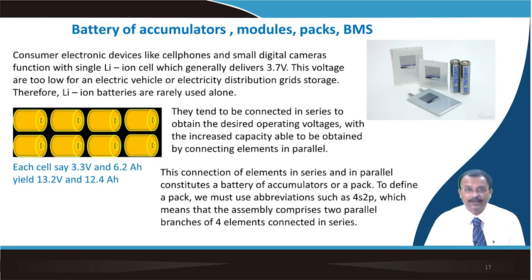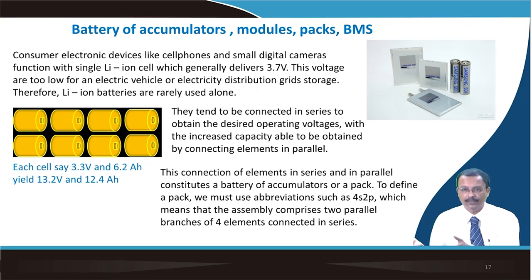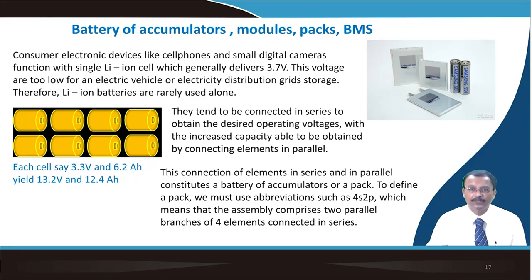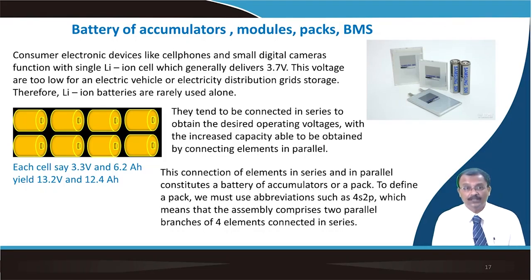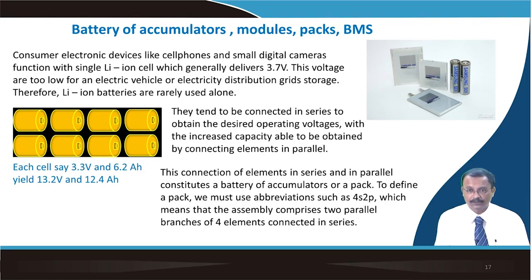Consumer electronic devices like cell phones or small digital cameras function with a single lithium-ion cell, which generally delivers about 3.7 V with capacity ranging from 1000 mAh to 2600 mAh depending on the chemistry used. Typical shapes include the pouch cell (prismatic cell) and the cylindrical cell. This voltage is too low for an electric vehicle or storage battery application, so a single lithium-ion battery is rarely used alone.